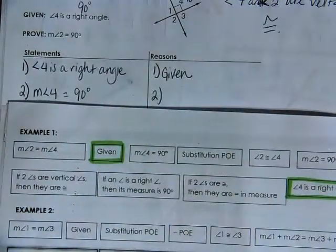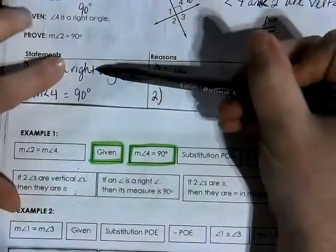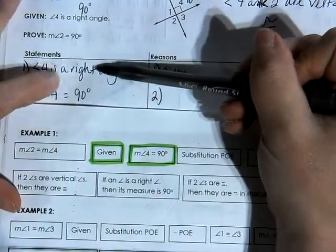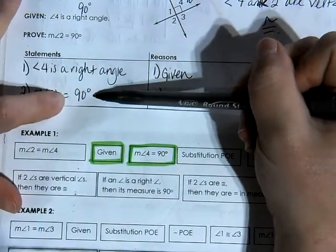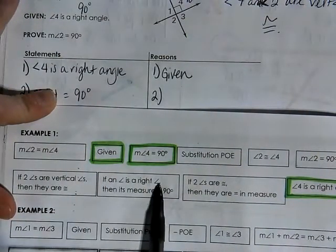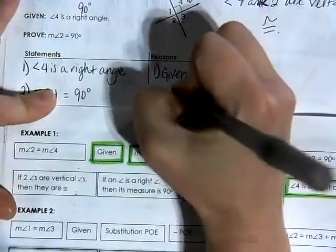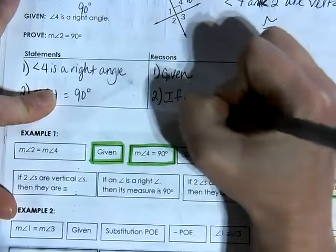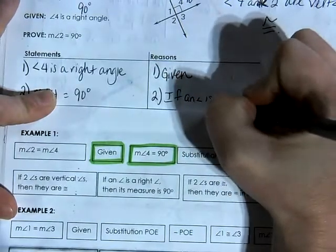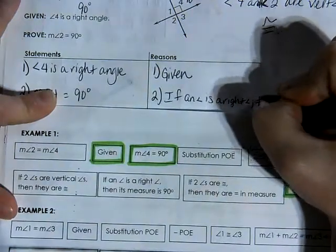Why would I write that? What came before is we had a right angle, and what came next is it equals 90 degrees. So our if-then statement is: if an angle is a right angle, then its measure is 90 degrees.